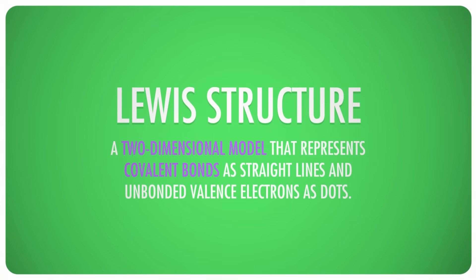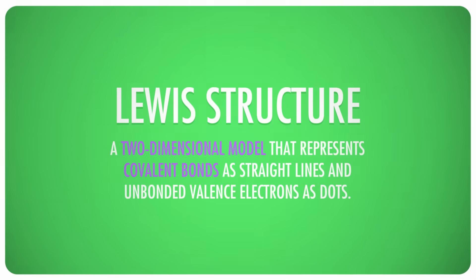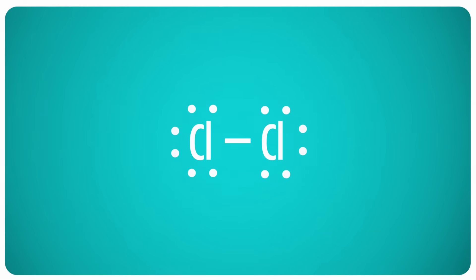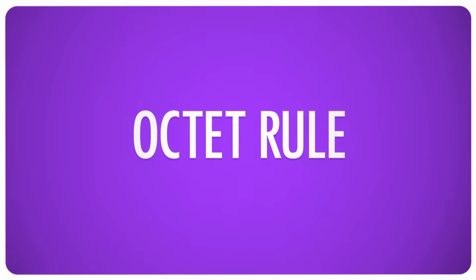A Lewis structure is a two-dimensional model that represents covalent bonds as straight lines, and unbonded valence electrons — those in the outermost energy level of an atom — as dots. Inner electrons aren't shown at all, and although it was developed to explain covalent bonds, it also works for ionic bonds. In Lewis structures, bonds are formed by pairs of valence electrons called bonding pairs in the space between two atoms, and pairs of electrons attached to only one atom are known as lone pairs. Atoms are most stable when their outermost electron shells are filled — for many atoms that takes eight electrons, so it's called the octet rule.